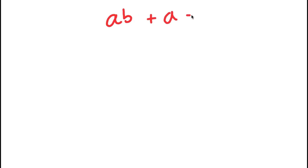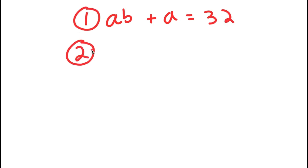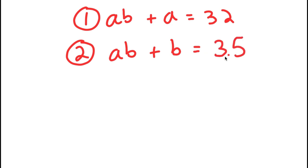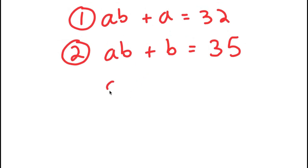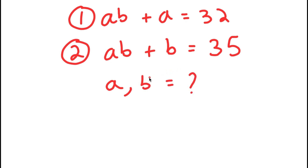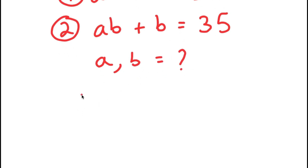Alright, so in this video I'm going to be solving a system of equations. I have two equations: my first is AB plus A equals 32, and my second equation is AB plus B equals 35. To solve the system of equations, I have to find the values of A and B. To start out, I'm going to subtract equation 2 from equation 1.